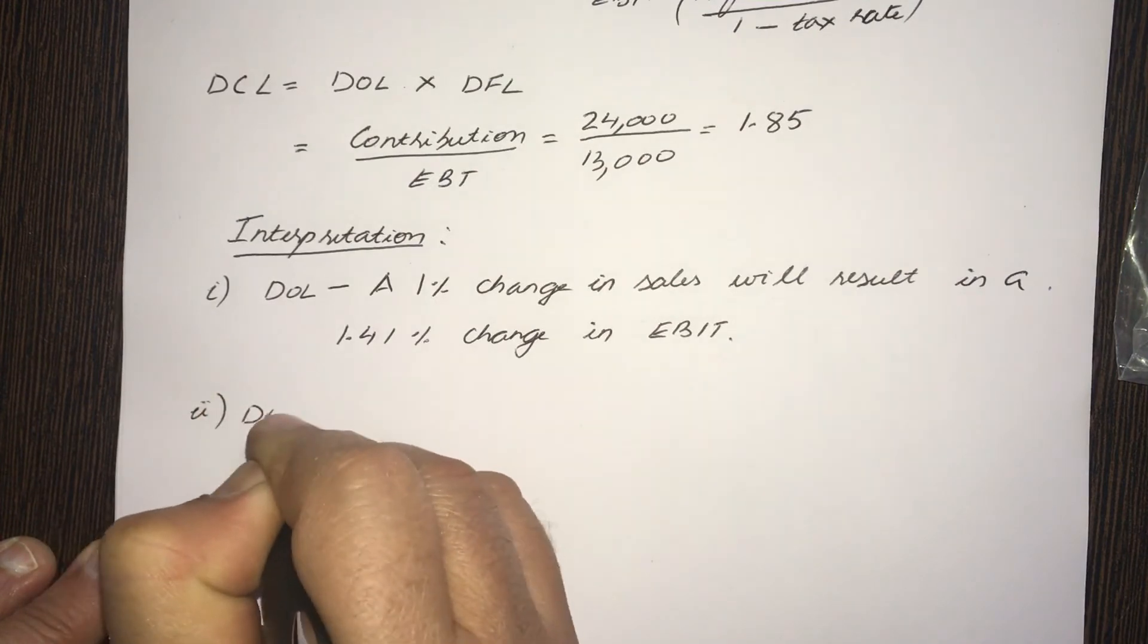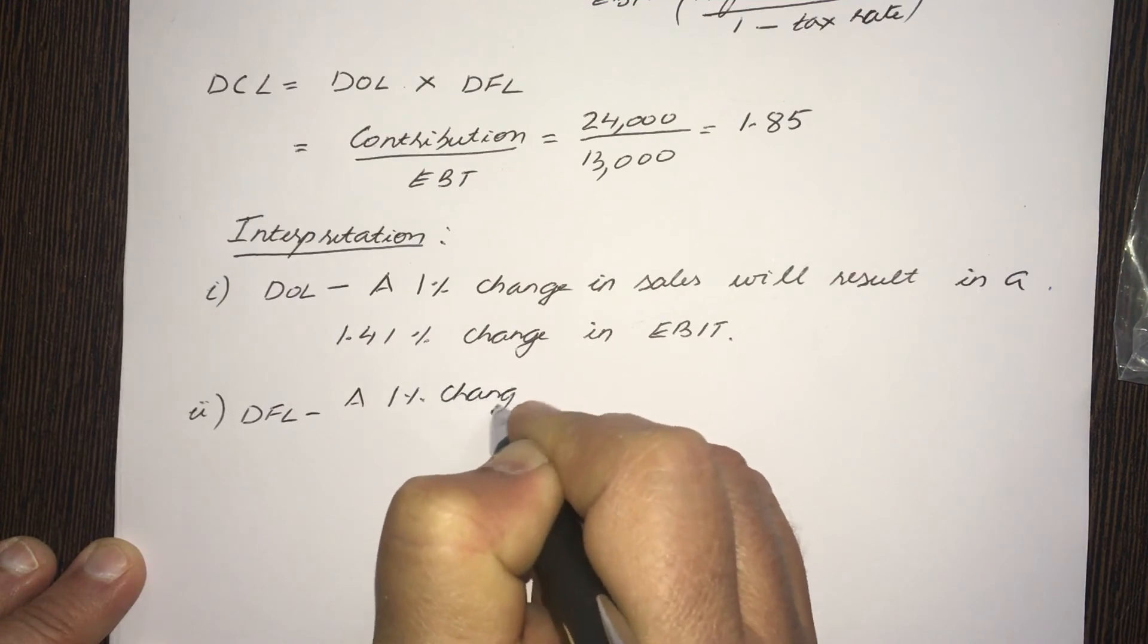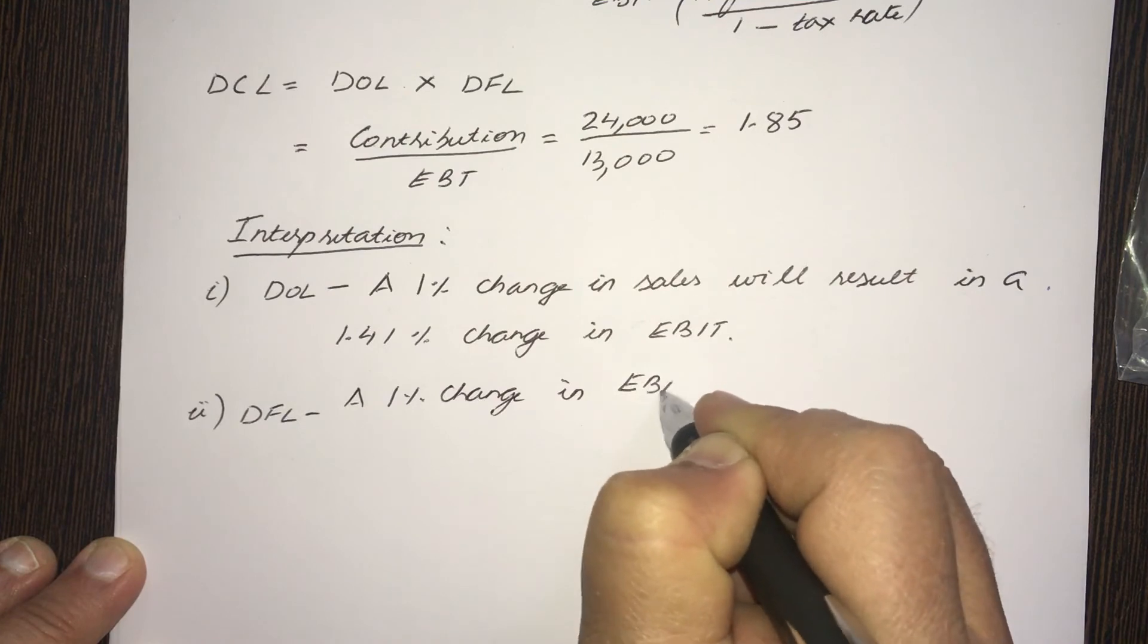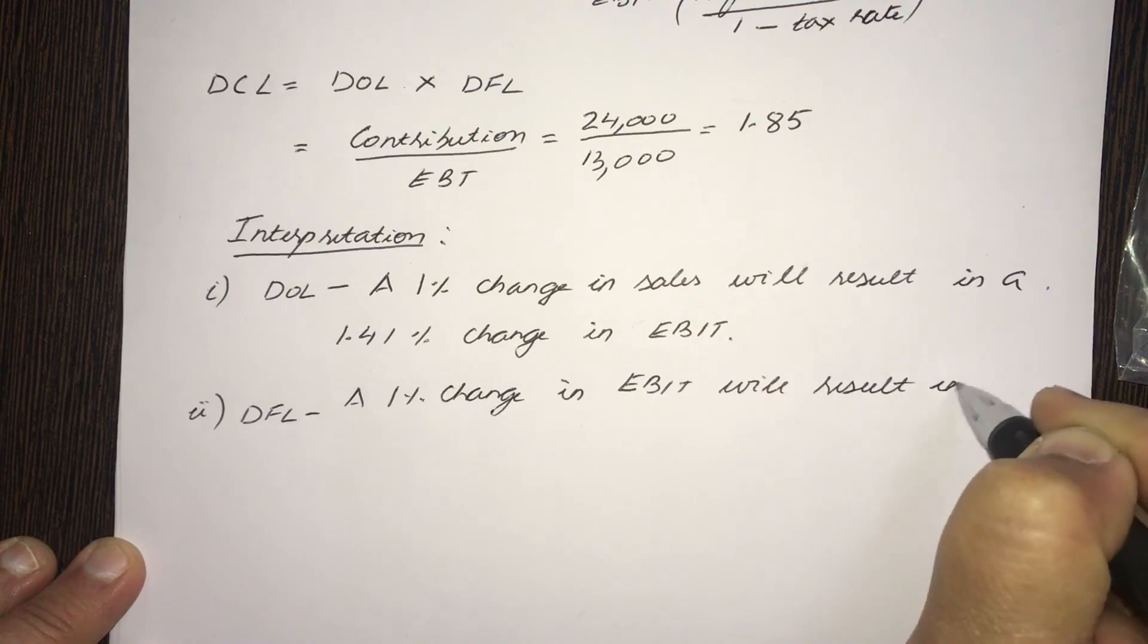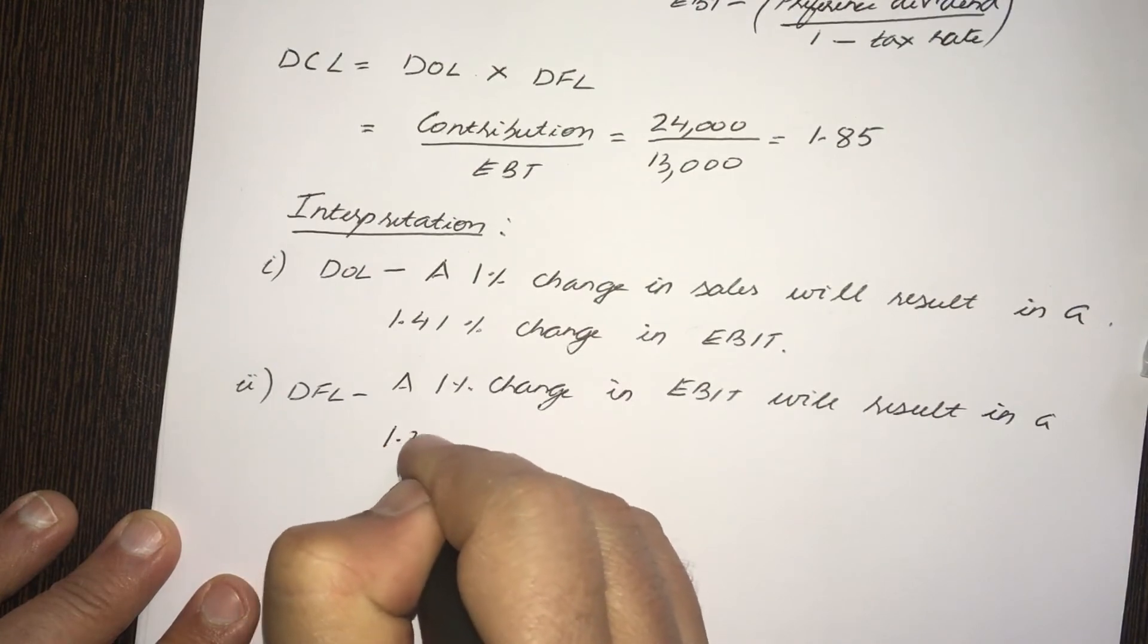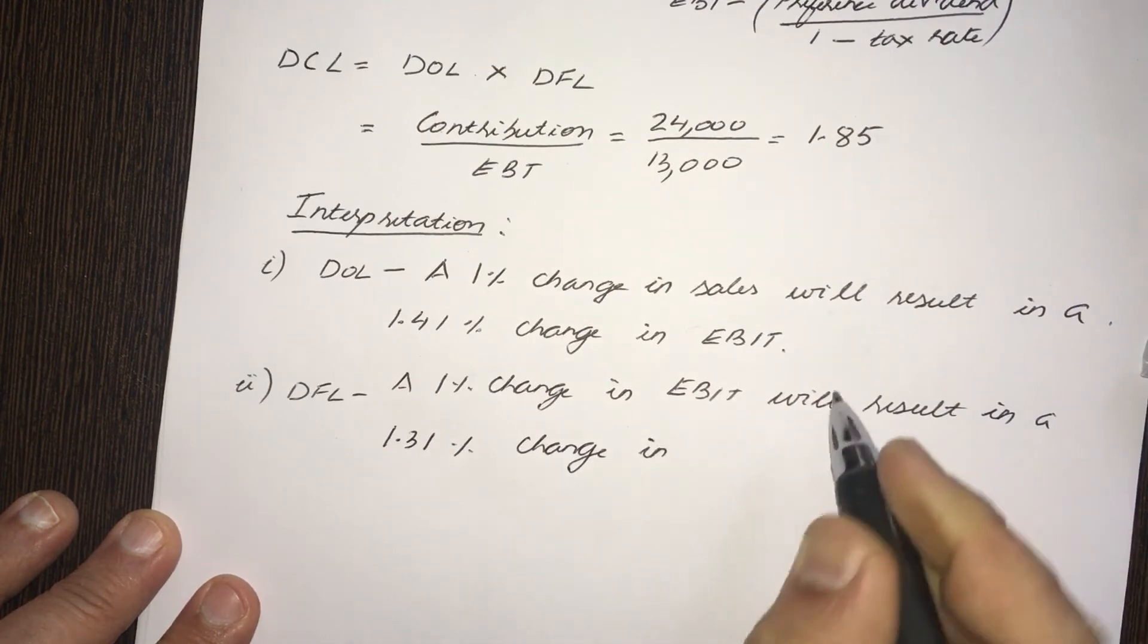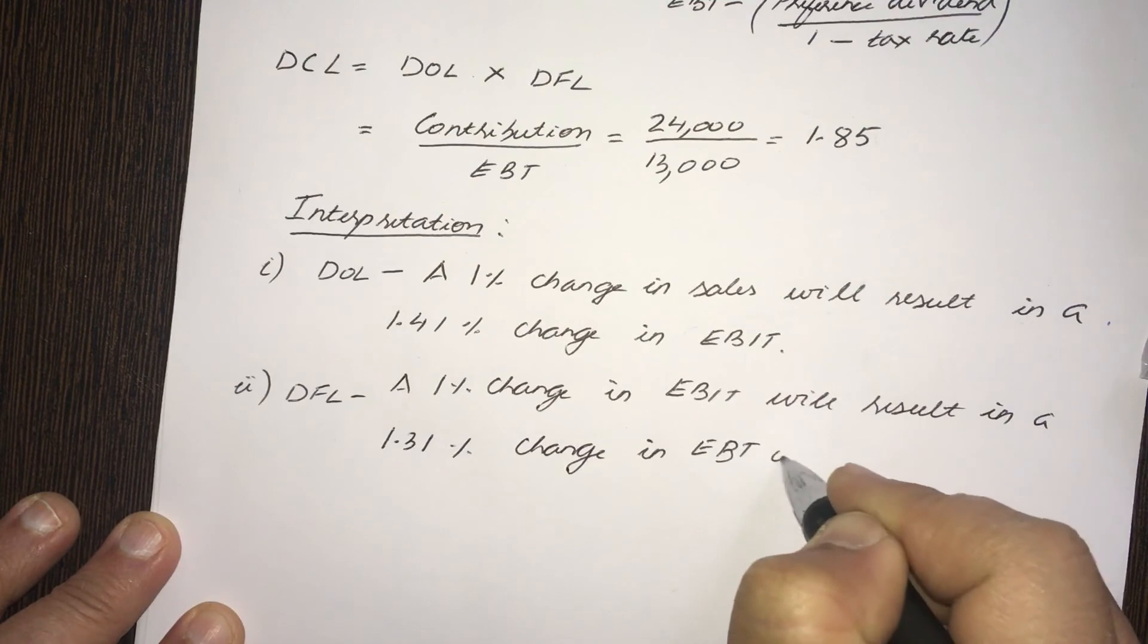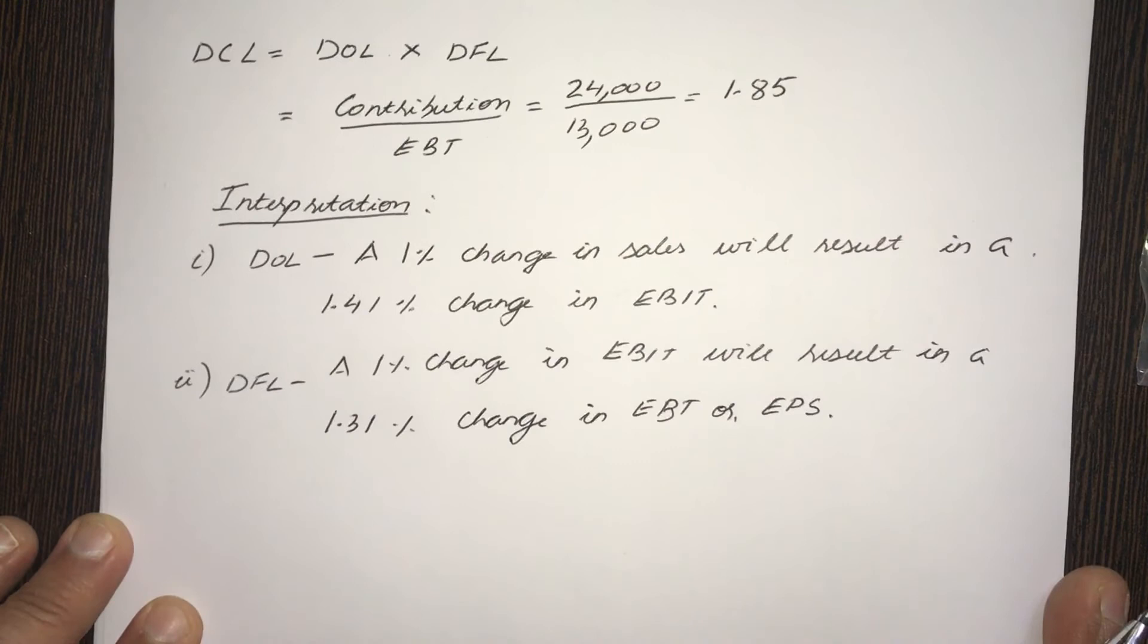Second, for DFL, a 1% change in EBIT will result in... What is your DFL? 1.31. So, it will result in a 1.31% change in EBT, earnings before tax, or EPS, earnings per share.